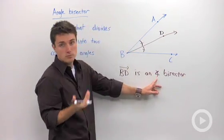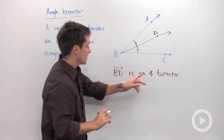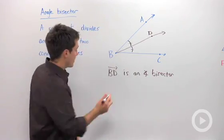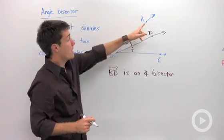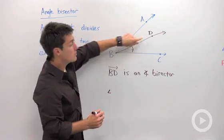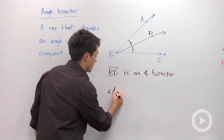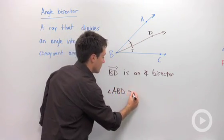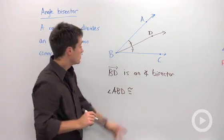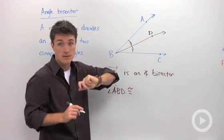So to differentiate my angles from L's, I like to draw a little arc through them. And therefore we could say that angle ABD, which is the smaller angle, is congruent to angle DBC, the other angle.